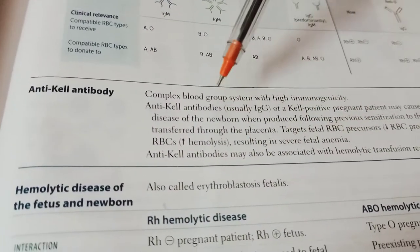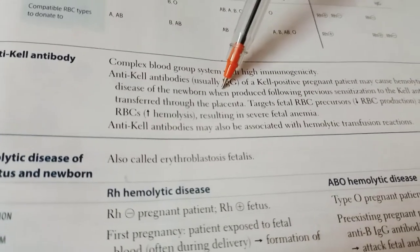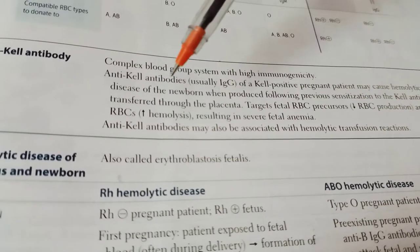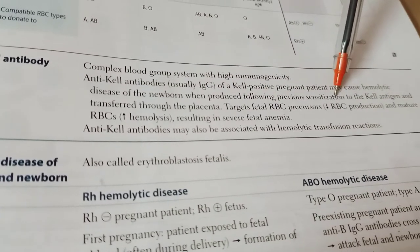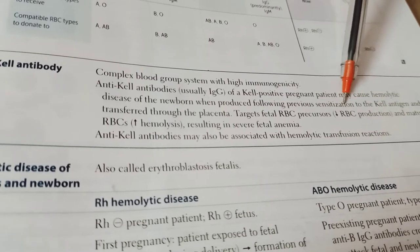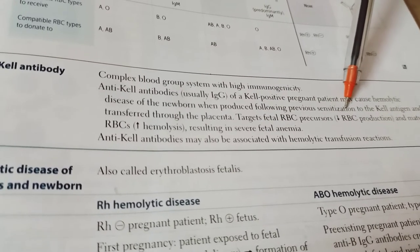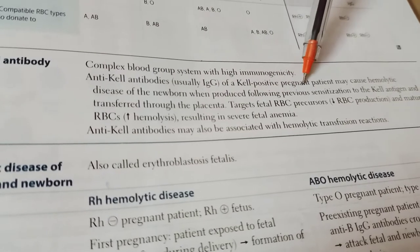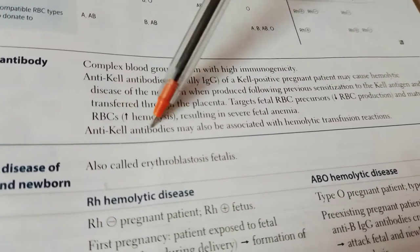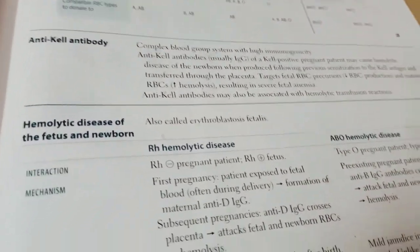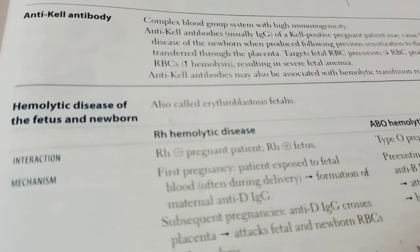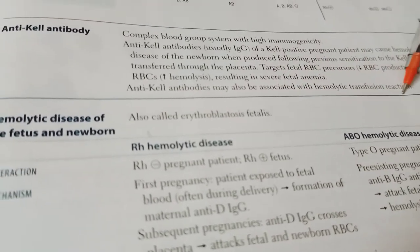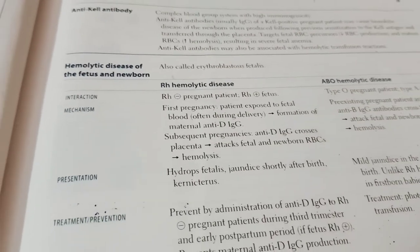Anti-Kell antibody is usually IgG and can cross the placenta. A Kell-positive pregnant patient may cause hemolytic disease of the newborn when the mother becomes sensitized to the Kell antigen from a previous pregnancy. The antibody targets fetal RBC precursors, causing decreased RBC production and increased hemolysis, resulting in severe fetal anemia. Anti-Kell antibodies are also associated with hemolytic transfusion reactions.